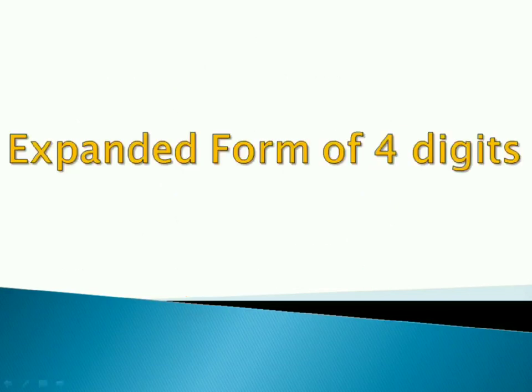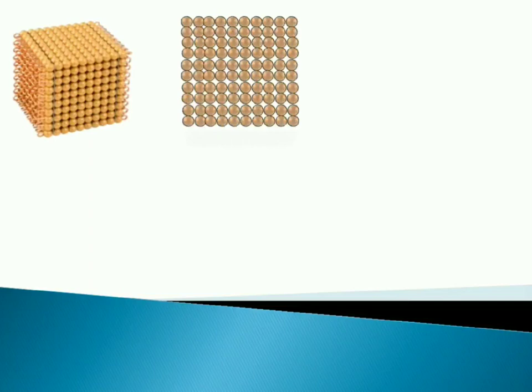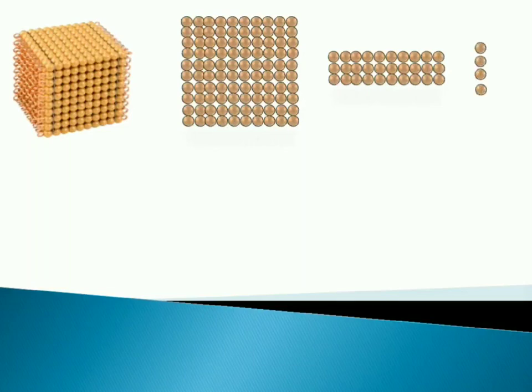So let's start with expanded form of four digit numbers. This box has thousand walls, so one such box is one thousand. Next is hundred walls. This square shows one hundred. Next one is a row of thirty walls. We have three such rows. After that four unit balls. Let's find the number.